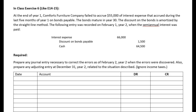Let's look at another exercise. At the end of year one, Comfort's Furniture Company failed to accrue $55,000 of interest expense that accrued during the last five months of year one on bonds payable. The bonds mature in 30 years. The discount on the bonds is amortized by the straight-line method.